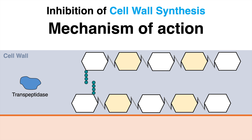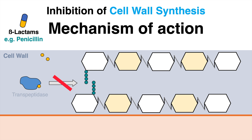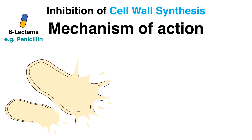An enzyme called transpeptidase catalyzes the reaction necessary to crosslink peptidoglycan. This mechanism is the target of an antibiotic that we already know — penicillin. Penicillin belongs to the group of beta-lactams, and what they do is inhibit the activity of the transpeptidase. No transpeptidase activity means no cell wall synthesis. The cell wall becomes unstable and bacteria are eliminated. Therefore, most antibiotics of the beta-lactam family are considered bactericidal. Since mammalian cells do not have any peptidoglycan, these antibiotics do not interfere with human cells.